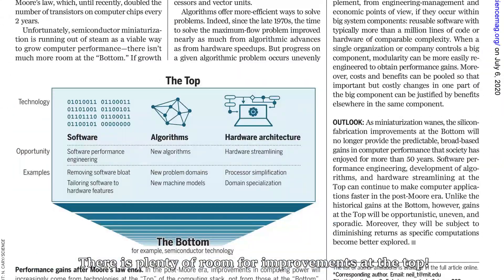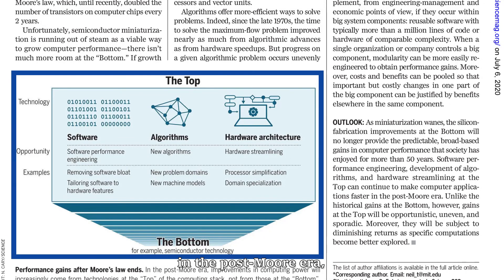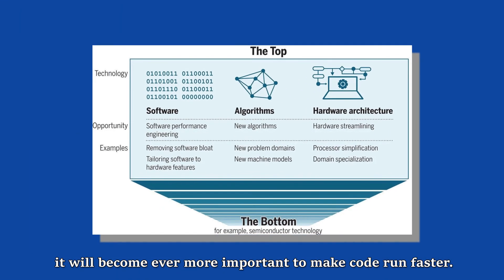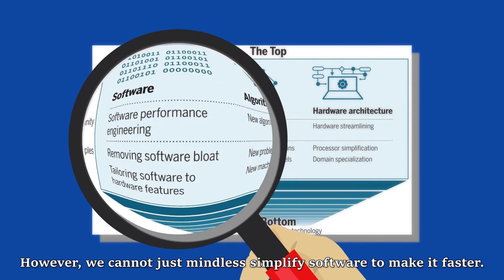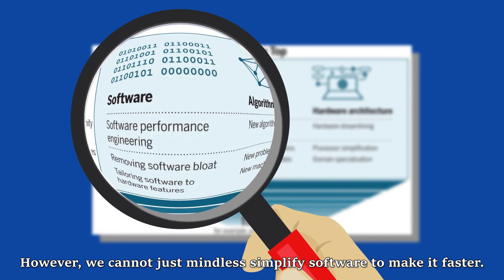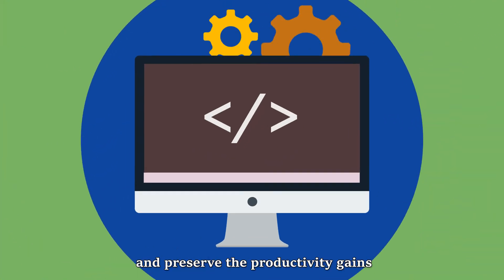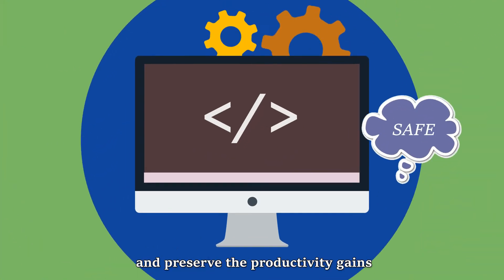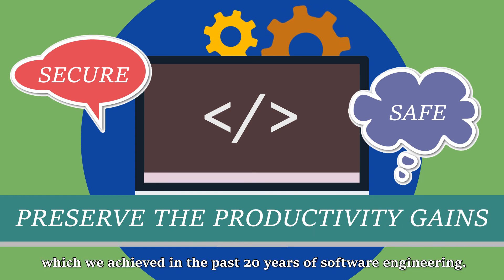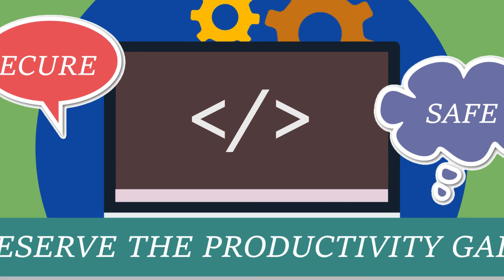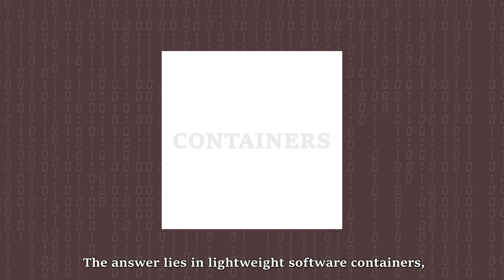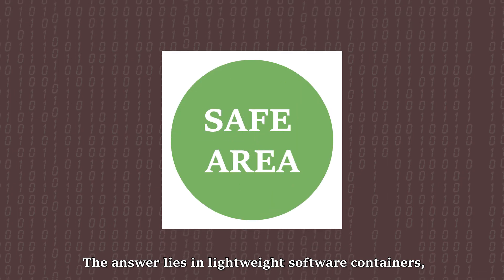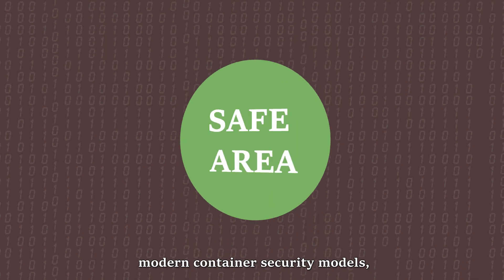Simply put, there is plenty of room for improvements at the top. In the post-Moore era, it will be ever more important to make code run faster. However, we cannot just mindlessly simplify software to make it faster — we must do it in a way that is safe, secure, and also preserves the productivity gains achieved in the past 20 years of software engineering.